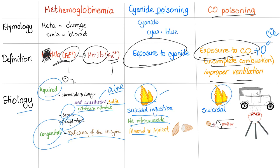For carbon monoxide poisoning, the main causes are: fires, suicide, the classic story of a running car in a closed garage, obstructed mufflers, and barbecues.